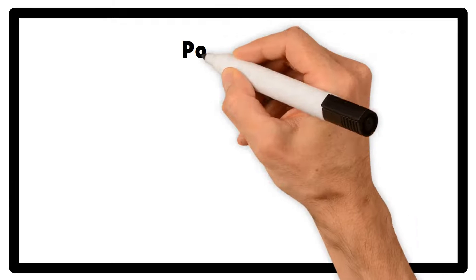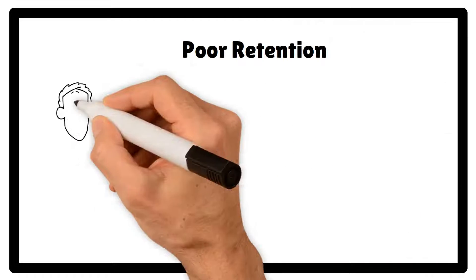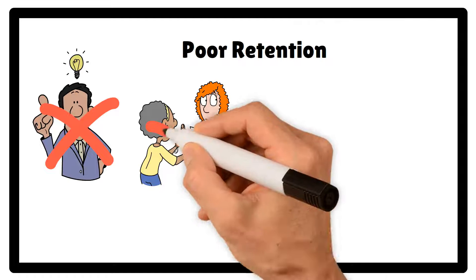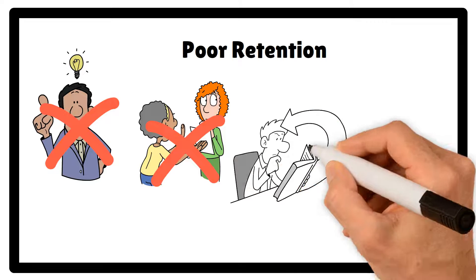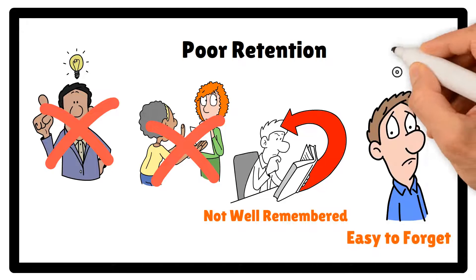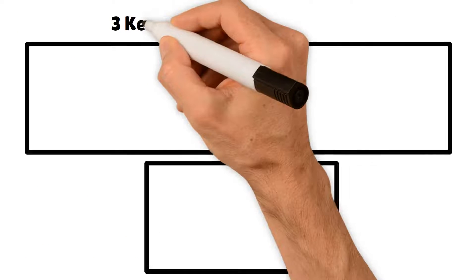The third feature of shallow processing is poor retention. Because shallow processing doesn't involve understanding or relating to deeper meanings, the information processed this way is not well remembered. It's easy to forget because it hasn't been deeply encoded in our memory.